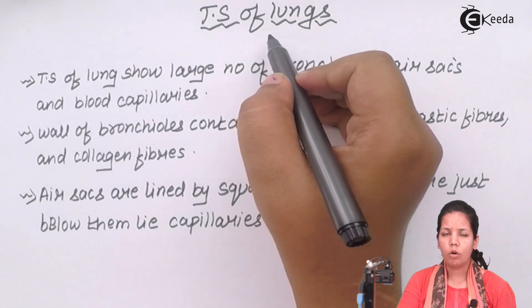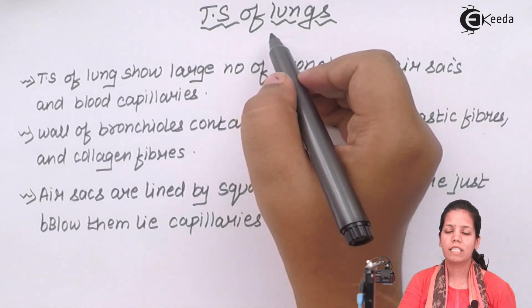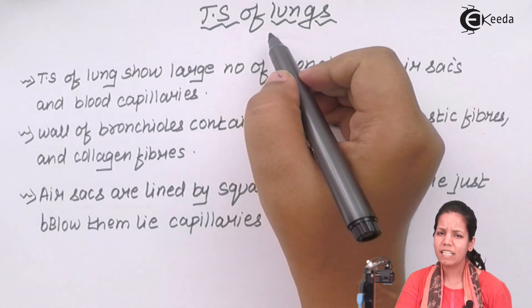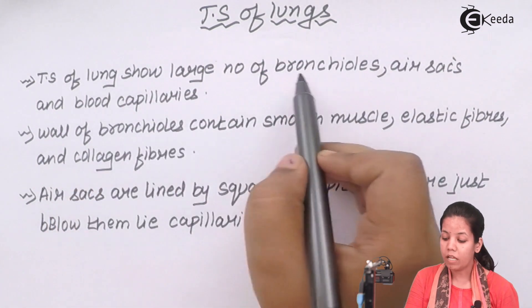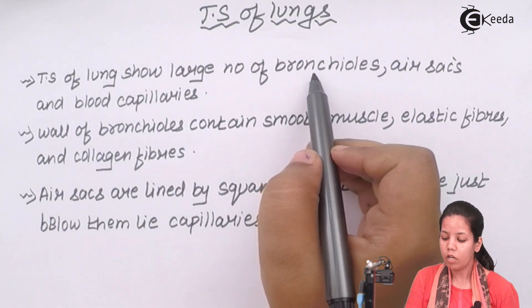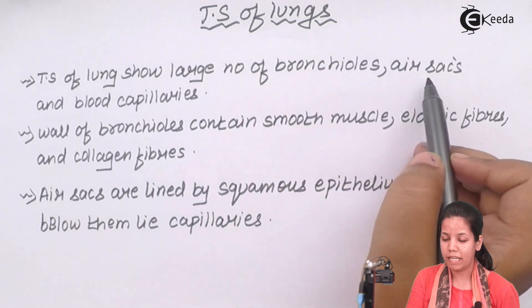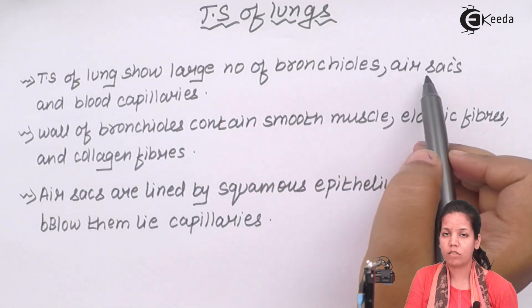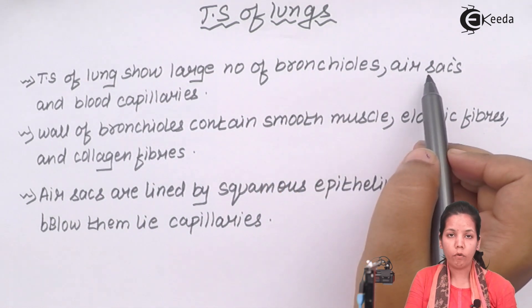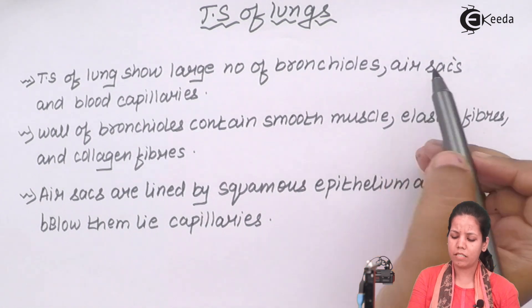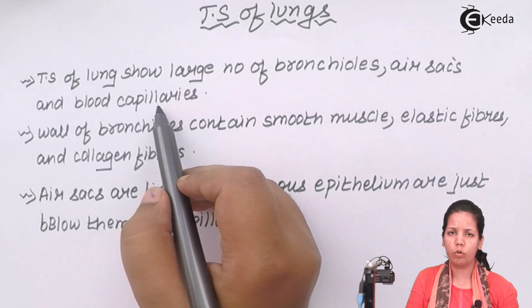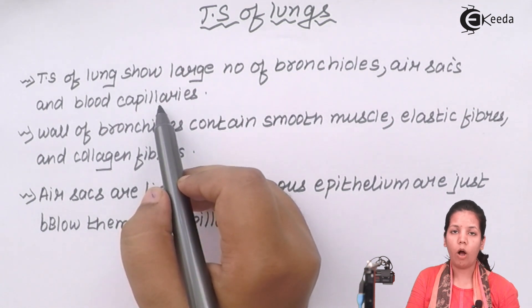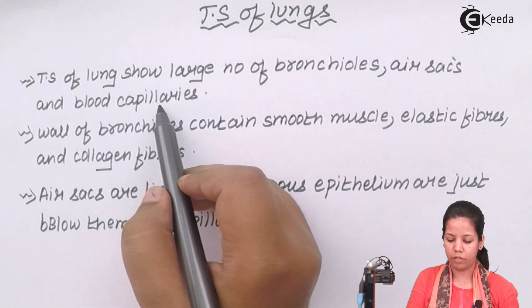TS of lungs, or simply transverse section of lungs, shows a large number of bronchioles or bronchi, as well as air sacs or alveoli at the end of those bronchi, and the presence of blood capillaries. These blood capillaries could be portal circulation or hepatic circulation blood capillaries.